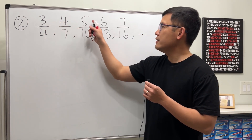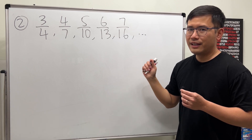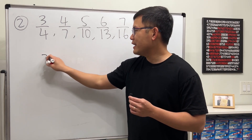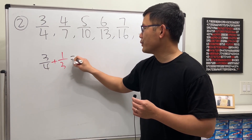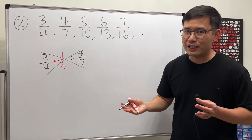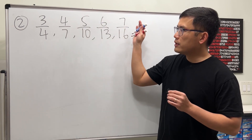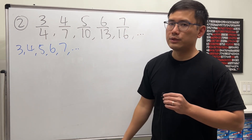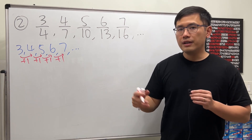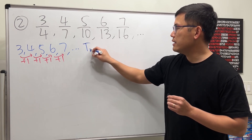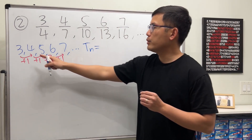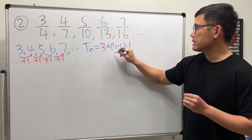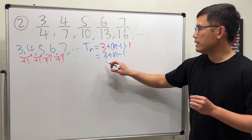Number two: 3/4, 4/7, 5/10, 6/13, 7/16. The top is going up by 1 and the bottom is going up by 3. However, do not just say 3/4 plus 1/3 equals 4/7 — this is not how we add fractions. We'll separate the numerators and denominators. For the top: 3, 4, 5, 6, 7 — arithmetic with common difference 1. So t_n = 3 + (n-1)(1) = n + 2.